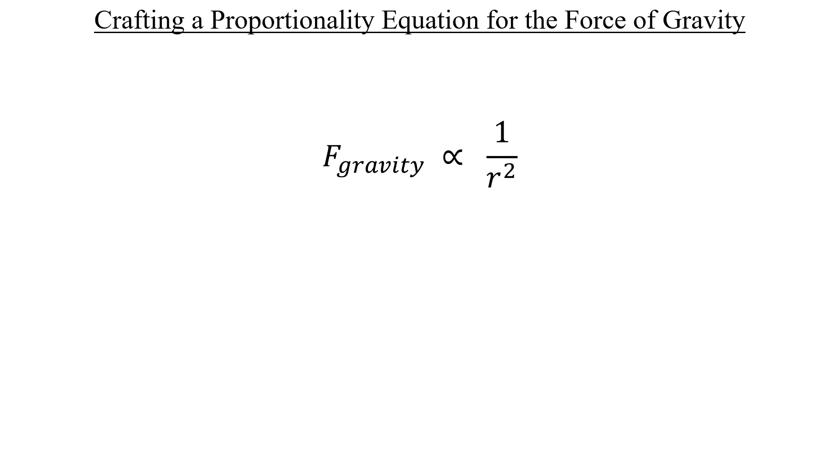The first sentence of the problem description tells us that the gravitational force of the Earth on some outside object, like the asteroid, is inversely proportional to the square of the distance from the center of the Earth. There's something missing here, though. If r is the distance measured from the center of the Earth outward, well,